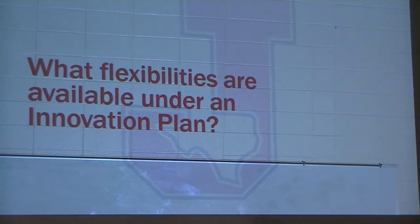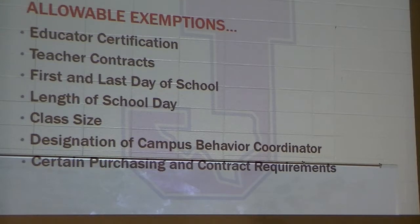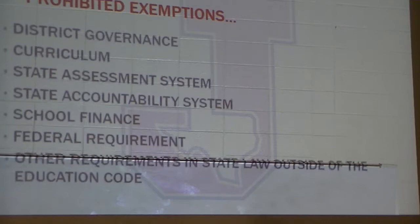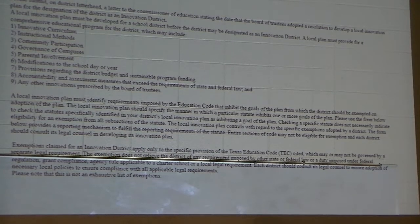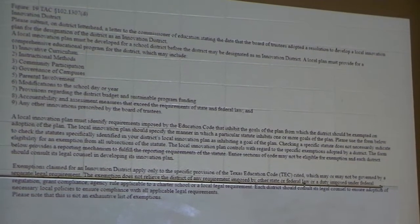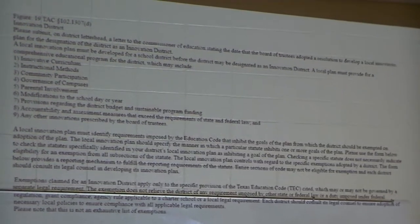What are the different flexibilities available under the plan? There's a long list of them shown on the PowerPoint. Some of them can be allowed, and then there are things that do not fall under this at all — things that cannot be included in the plan. This is a form from TEA — the whole list of things that tells you what you can and can't do. When we started our committee meetings, we all had this form and went through as a committee looking at the different things available to us.